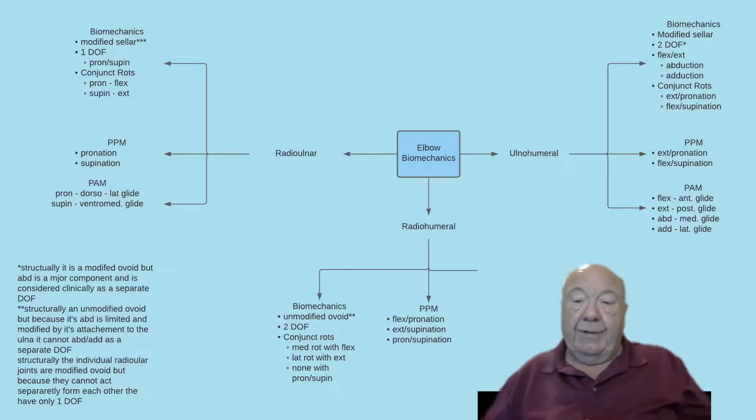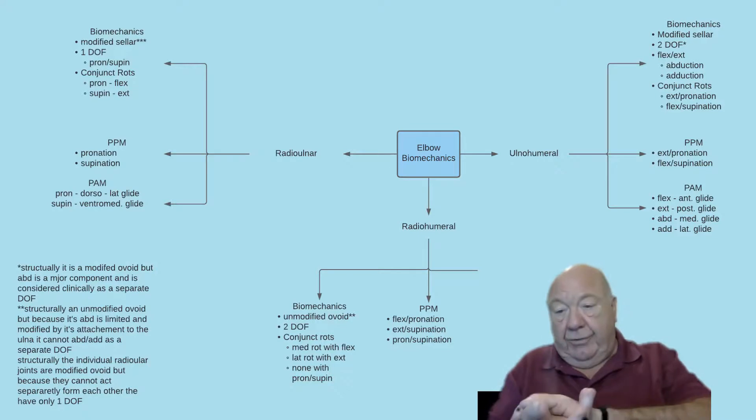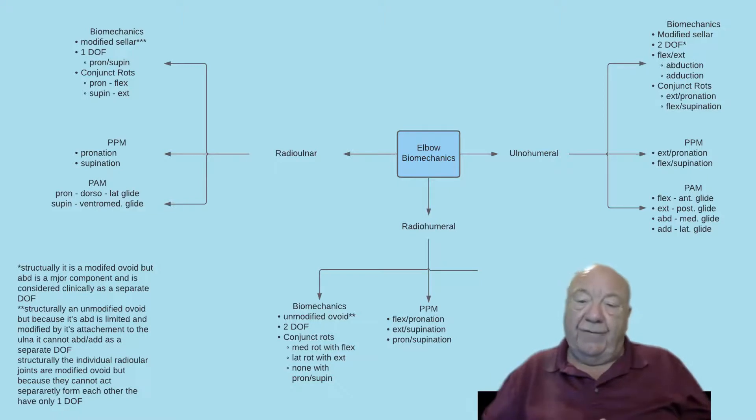Now the glides of the superior joint are in the opposite direction to the osteokinematic. So your PPM is basically pronation or supination—that's it. So to glide it to see if the joint has full range of pronation, you have to consider the direction of movement of the bone.